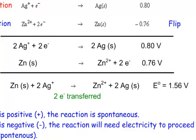That's as easy as it can be. You're going to flip one reaction, get the electrons the same, add them up. And that's it. That's all you've got to do.